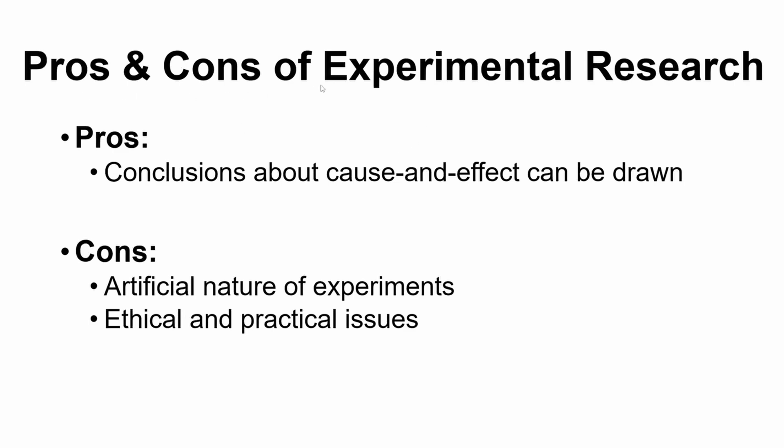Let's talk about our pros and cons of experimental research. Obviously, experimental research is fantastic for getting causality — we want to know the cause-and-effect relationship between two variables, and because of our manipulations and controls, we are able to make those conclusions. The cons actually relate to some of our issues with all of those controls: some people would argue that controls in experiments mean that the experiments themselves are now very artificial.